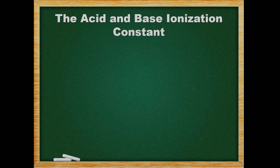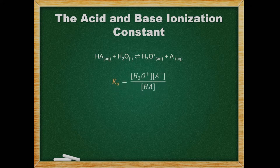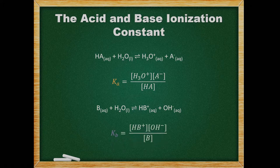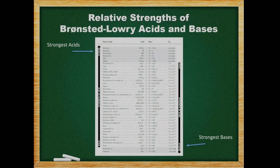Based on the reactions of acids and bases with water, we can write an equilibrium expression. From this, we get a Ka value or a Kb value. The Ka value is known as the acid ionization constant, while the Kb value is known as the base ionization constant. We don't include the concentration of water in the expression because it is a constant. The larger the Ka or Kb value, the greater the concentration of hydronium or hydroxide respectively.